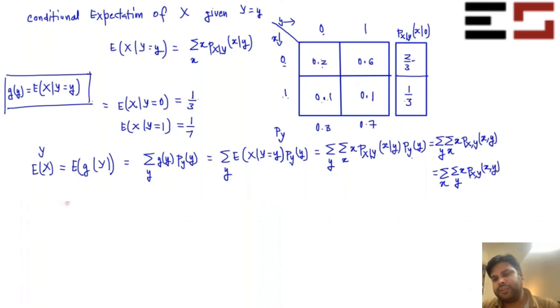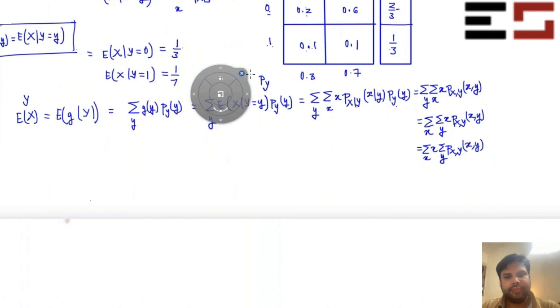Now you can switch the order in which you do the summation. And you'll get this. Now when you're summing with respect to Y, X can come out. Can you tell me what is this term? Yeah. Absolutely. This is the marginal of X. And this is nothing but the expectation of X. Is that fine?